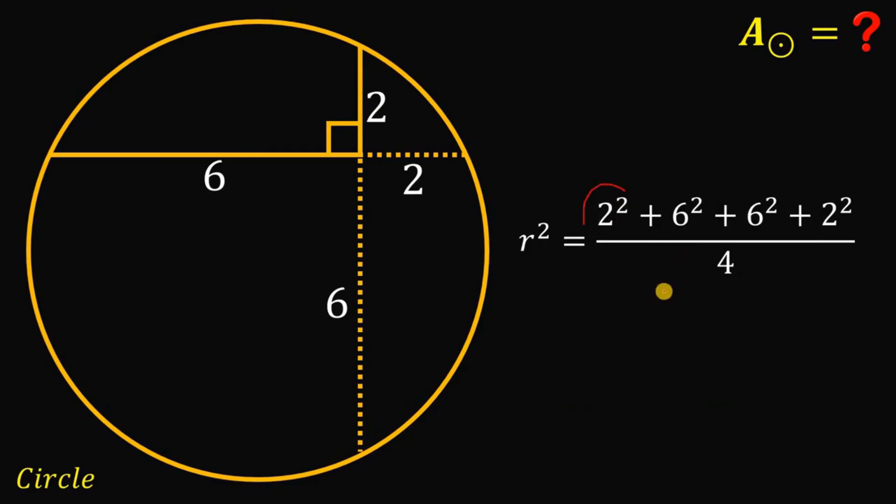Now, 2 squared is just 4 and 6 squared must be equal to 36. Now, 4 plus 36 this is 40, 40 plus another 40 this will give us 80 on the numerator and 80 divided by 4 this will give us 20. Therefore, the value of r squared is simply equal to 20.